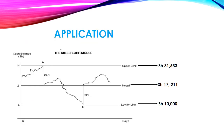Lastly, let me show you how the Miller-Orr model is applied in the real world using this curve. Using the figures calculated earlier: our lower limit provided by management is 10,000 shillings, placed at the bottom; Z, our target cash balance, is 17,211 shillings in the middle; and our upper limit is 31,633 shillings at the top. The company always works towards maintaining a target cash balance of 17,211 shillings.